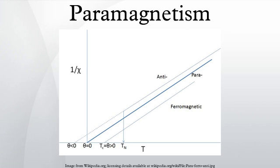Paramagnetism is a form of magnetism whereby certain materials are attracted by an externally applied magnetic field and form internal induced magnetic fields in the direction of the applied magnetic field. In contrast with this behavior, diamagnetic materials are repelled by magnetic fields and form induced magnetic fields in the direction opposite to that of the applied magnetic field.